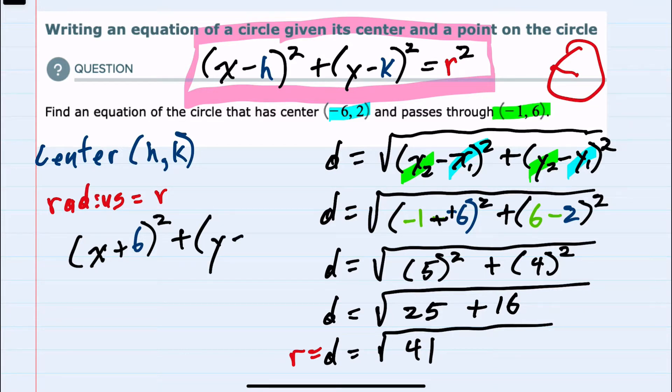And here k is 2. This will equal r². And we know that r is the square root of 41. So this will be (√41)².